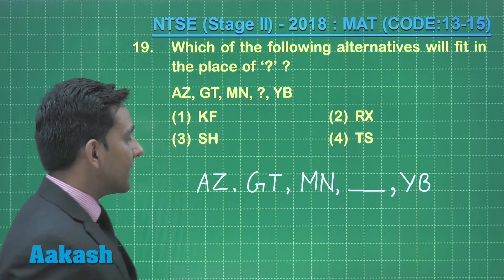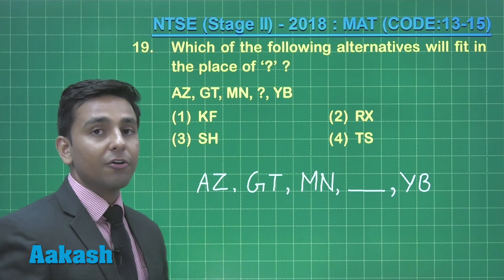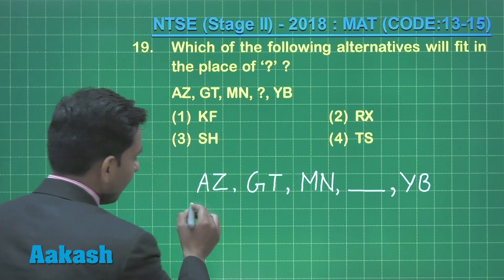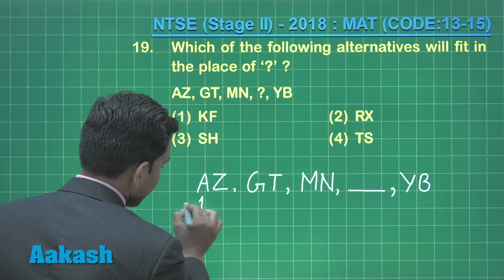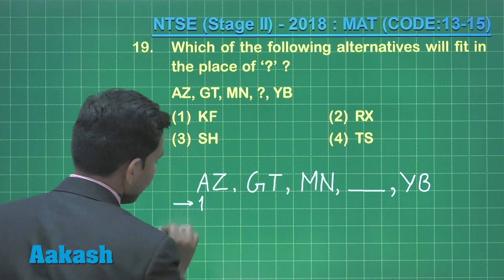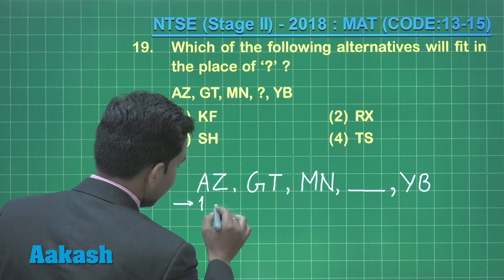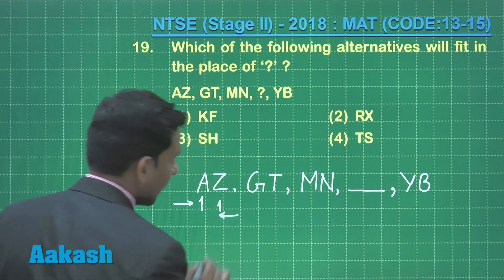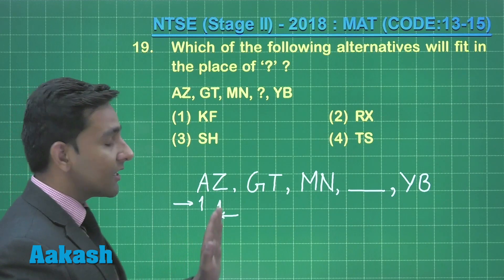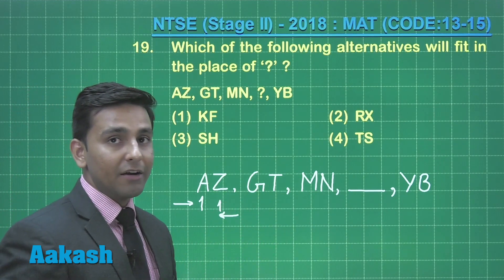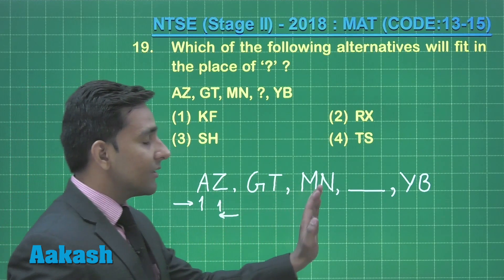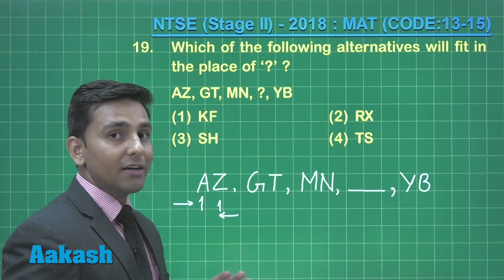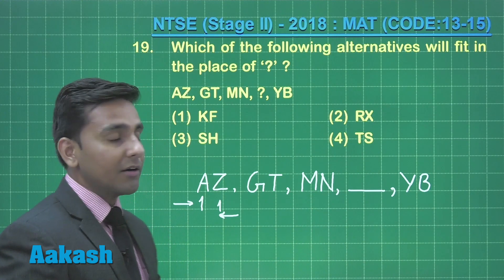We can see that az is a pair of opposite alphabets — the position of letter a is 1st from the start of the alphabet, and the position of letter z is 1st from the end of the English alphabet. The other terms follow the same pattern, meaning we have to find the missing term such that it contains a pair of opposite alphabets.